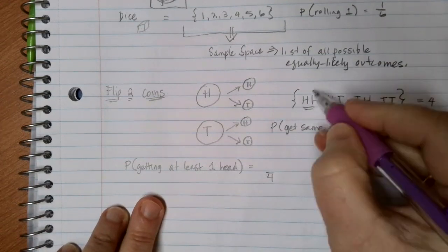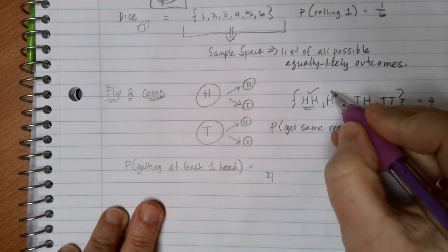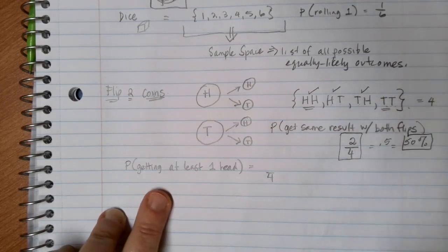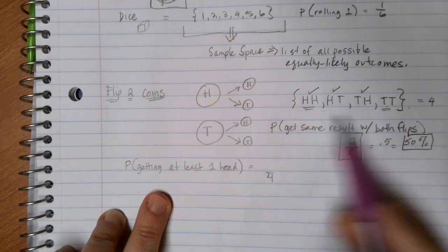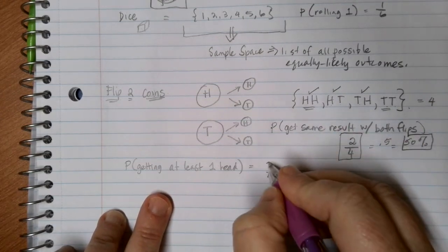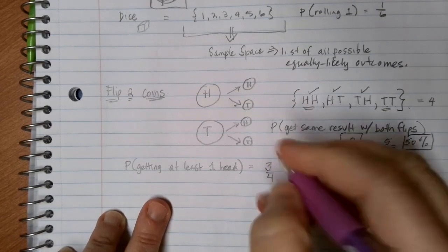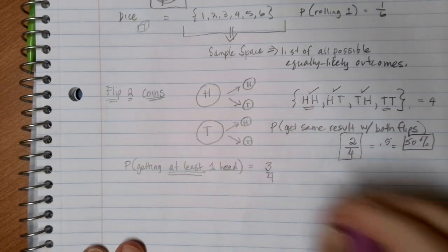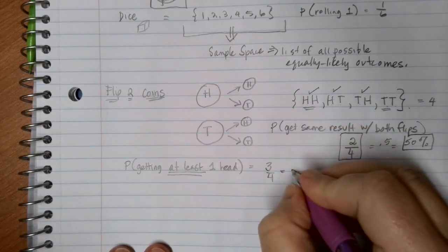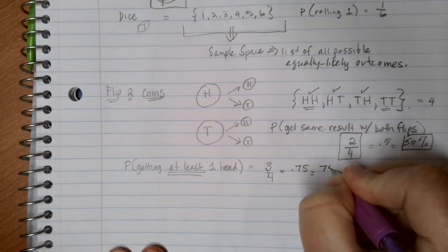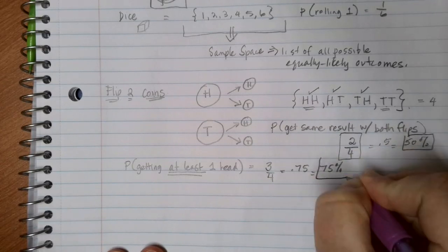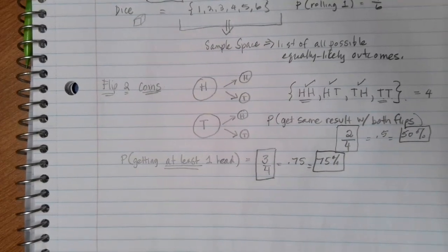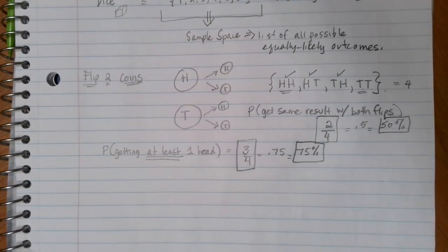This one would work. Heads and then tails would work. Tails and then heads would work. Tails and tails would not work, because that doesn't have any heads in its description. So in this case, I can count up, and I end up with three out of four possibilities for getting at least one head. And in this case, I can divide, and I can multiply by 100, and I find that there's a 75 percent probability of getting at least one head if I flip a coin two times.